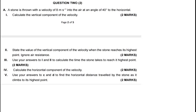In this video, we are going to continue looking at projectile motion. We have question 2 now, which is saying: a stone is thrown with a velocity of 8 meters per second into the air at an angle of 40 degrees to the horizontal. Calculate the vertical component of the velocity. Before we read the questions, it's important for us to know which case we are dealing with.